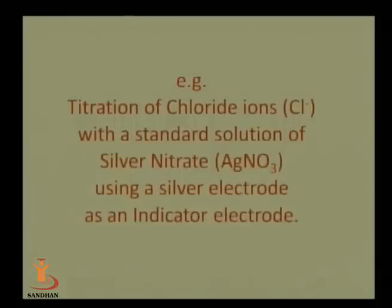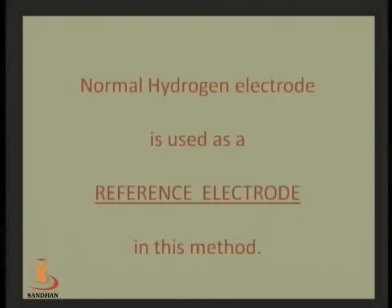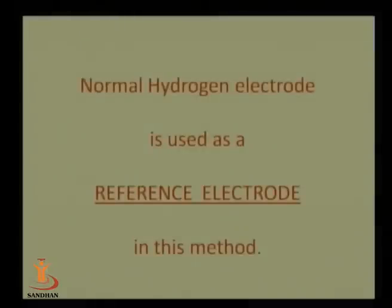For example, the titration of chloride ions with a standard solution of AgNO₃ uses a silver electrode as the indicator electrode and a normal hydrogen electrode as the reference electrode. In precipitation titration, when AgNO₃ solution is added from the burette to the NaCl solution, precipitation gradually forms. At the endpoint, all chloride ions are precipitated. After the endpoint, there is a sharp rise in the graph, and no excess precipitation occurs, giving a sharp endpoint.